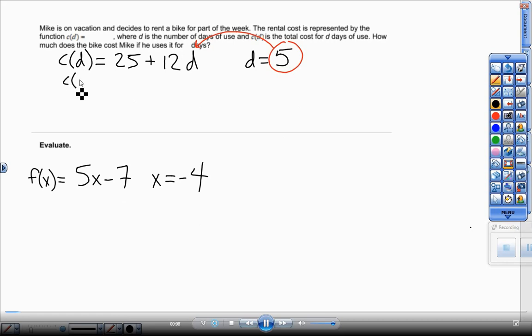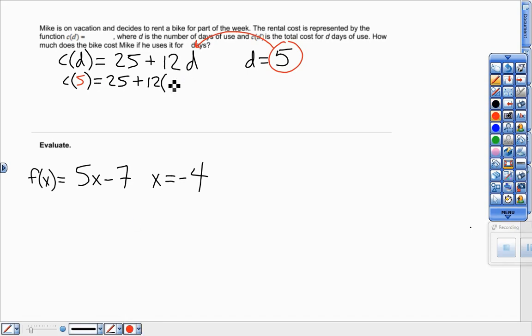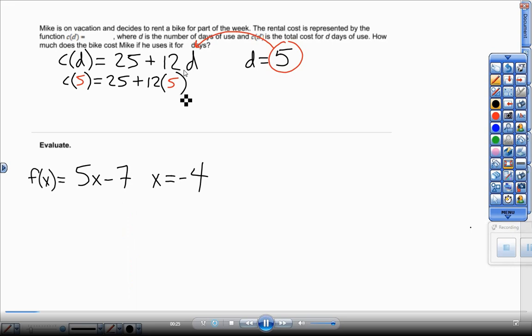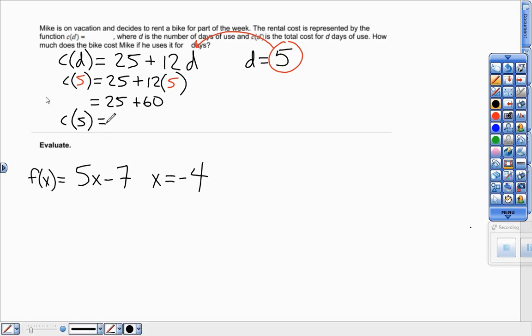these are plug-in the number problems. I'm plugging in 5 for D. They're going to tell you how many days. Plug it 5 where the D is right here next to that 12. And then I'm just timesing 5 times that 12 and adding that to 25. So the cost of bikes after 5 days is $25 plus $60 or the cost of 5 bikes is $85.